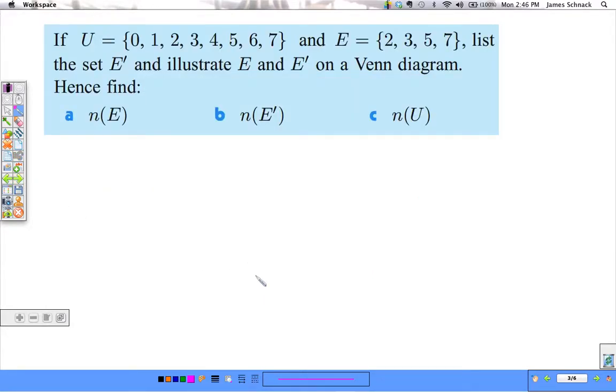So, some examples. U is 0, 1, 2, 3, 4, 5, 6, 7. Then we have set E. List set E prime and illustrate E and E prime on a Venn diagram. And then find the number of things in these three sets.